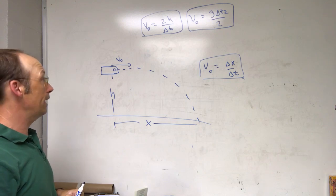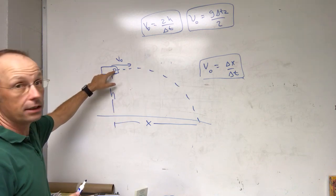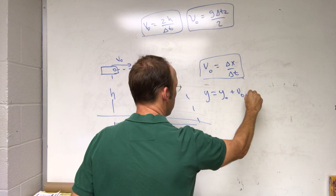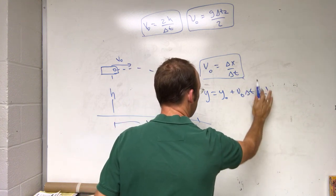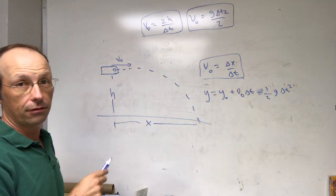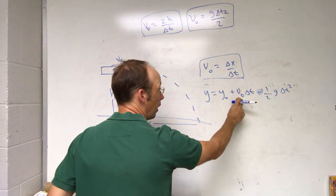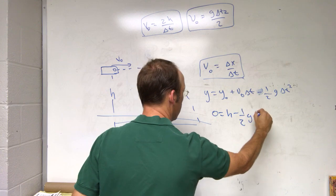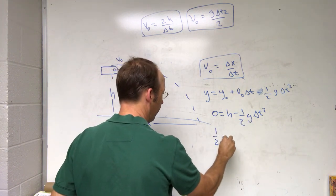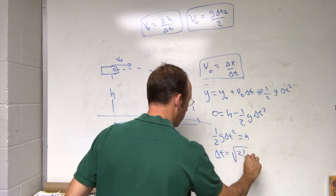A better approach is to use the y-motion to calculate the time instead of measuring it with a stopwatch. The x and y motions are independent. In the y direction, initial vertical velocity is zero, so using the kinematic equation y = y0 + v0·delta-t - ½g·delta-t²: the final y is 0, initial y is h, and initial y-velocity is zero. This gives 0 = h - ½g·delta-t², so delta-t equals the square root of 2h over g.